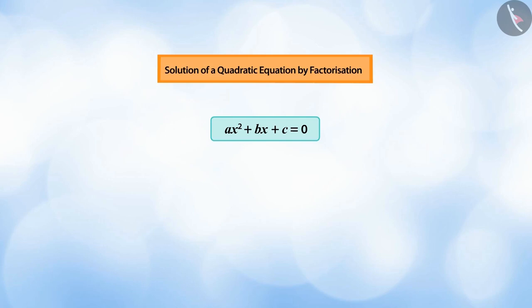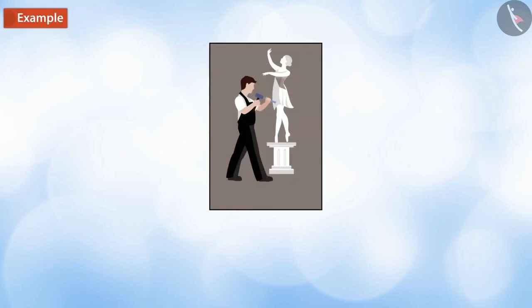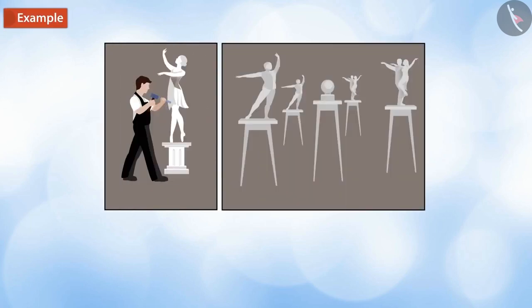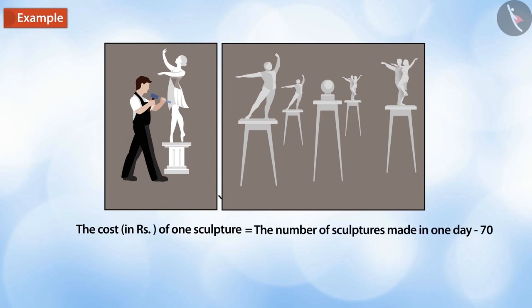Do you know how to solve a quadratic equation by using factors? A sculptor makes some sculptures in a day. The cost in rupees of one sculpture is equal to the number of sculptures made in one day minus 70. On a particular day, the sculptures cost rupees 1800. Find the number of sculptures made that day.